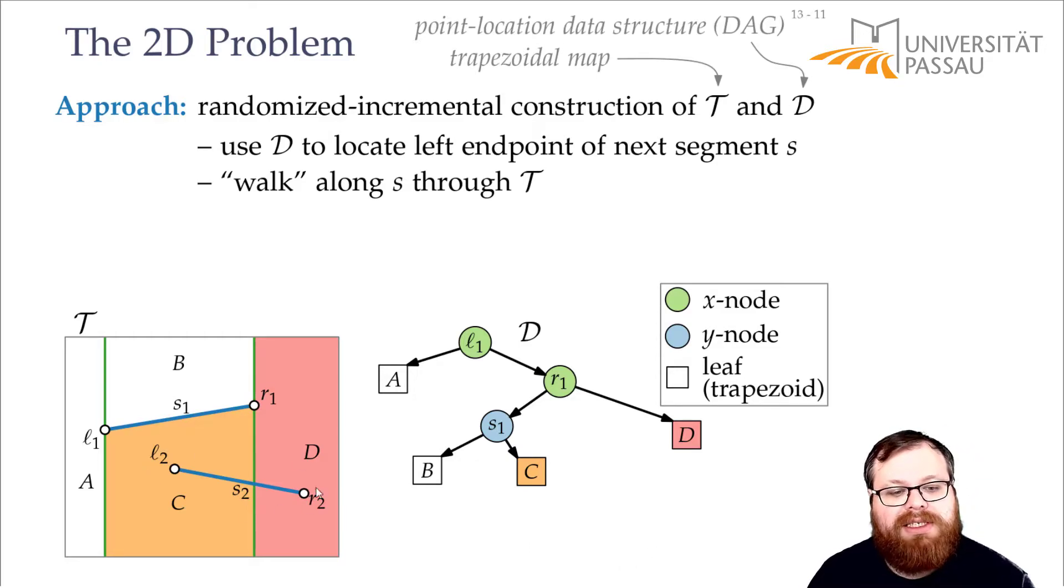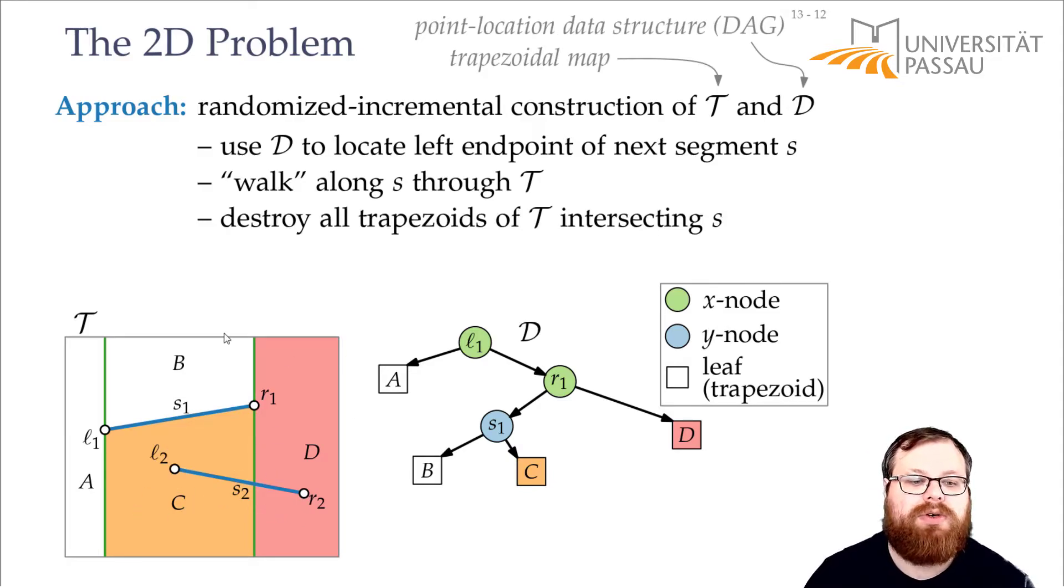Now all these trapezoids that we walk through or into on this way, that we have to destroy, and we have to rebuild. So in this case, we only have C and D, and we destroy them.